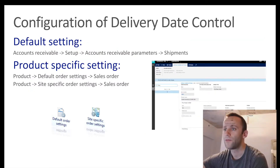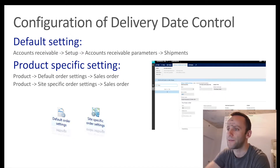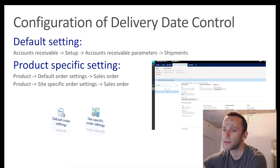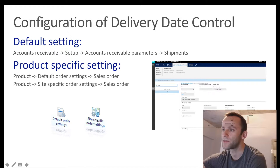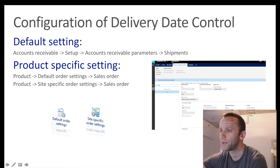We're going to go over the next slide where you configure your delivery date control, and there are some minor changes made to the Dynamics 365 environment. In AX 2012 there would be two different forms - default order settings and site-specific order settings - to configure your delivery date control parameters. In Dynamics 365 for Operations, the site-specific order settings form was removed and replaced by a single default order settings form.